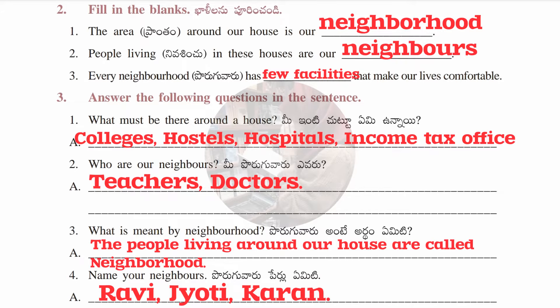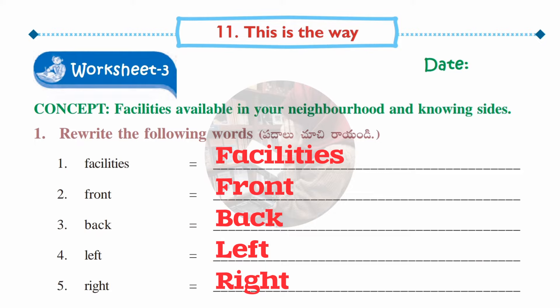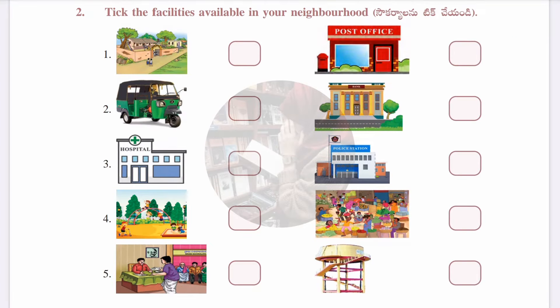Worksheet number three is taken from the concept 'Facilities Available in Your Neighborhood and Knowing Sites.' Write the date you are entering this worksheet. In the first section, rewrite the following words with a capital first letter: Facilities, Front, Black, Left, and Right.